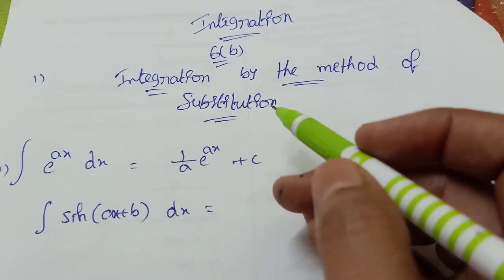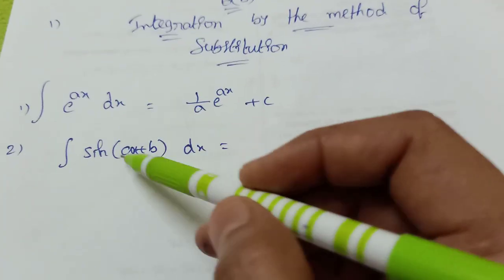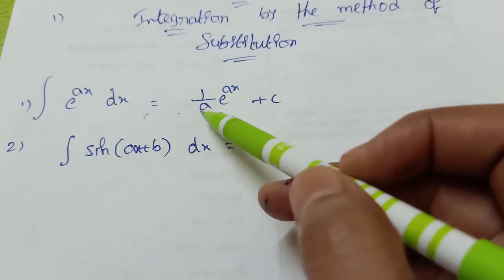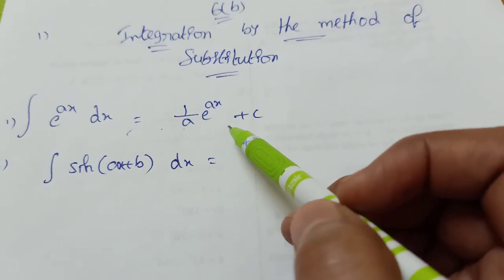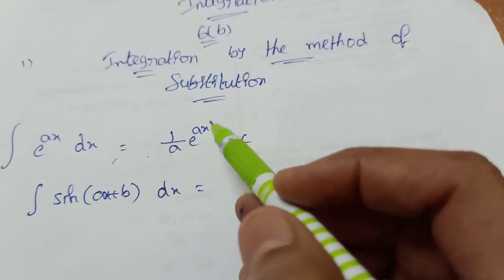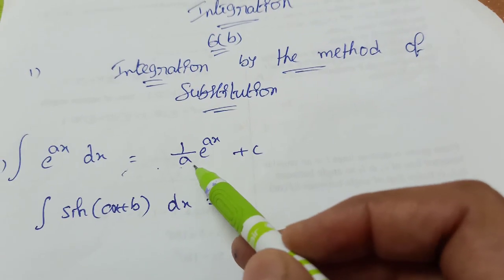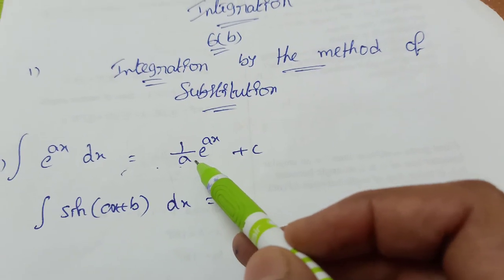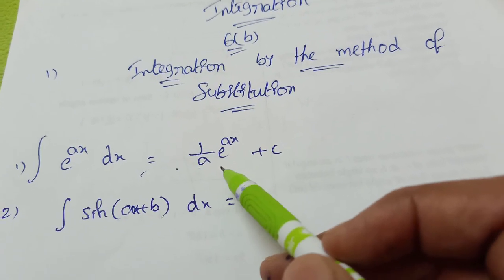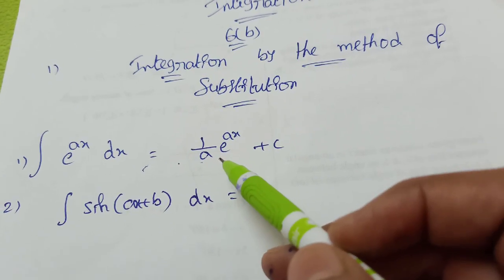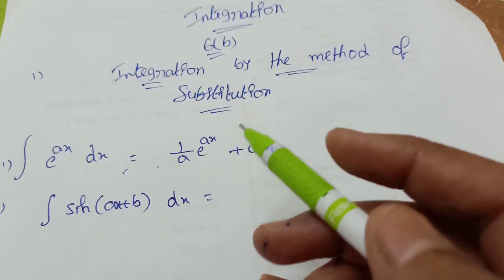Now, coming to the first formula: the integration of e^(ax) dx equals (1/a)e^(ax) + C. Whatever the coefficient of x is, it goes to the denominator in integration — it gets divided.